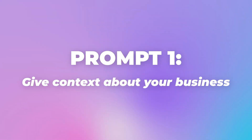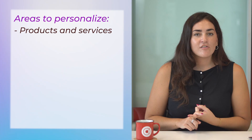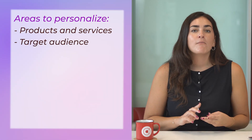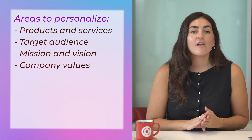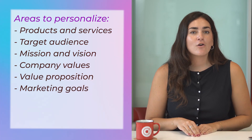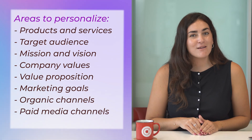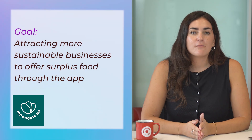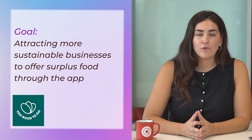Prompt one: give context about your business. Customization is crucial here. The more specific you are, the more personalized the AI's response will be. I'll demonstrate using Too Good To Go as a real company example. We need to personalize nine key areas: products and services, target audience, mission and vision, company values, value proposition, marketing goals, organic channels, paid media channels, and brand tone. For Too Good To Go, the goal is attracting more sustainable businesses to offer surplus food through the app.